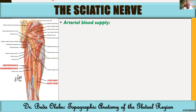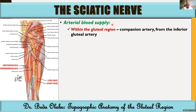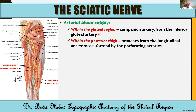Regarding blood supply to the sciatic nerve: the sciatic nerve is the largest nerve in the body, so it has blood vessels supplying it. In the gluteal region, it is supplied by the companion artery — a branch of the inferior gluteal artery. Within the back of the thigh, the sciatic nerve receives blood supply from the longitudinal anastomosis — the anastomosis formed by the perforating arteries from the profunda femoris artery that supply the posterior thigh. These perforating arteries anastomose to supply the sciatic nerve.